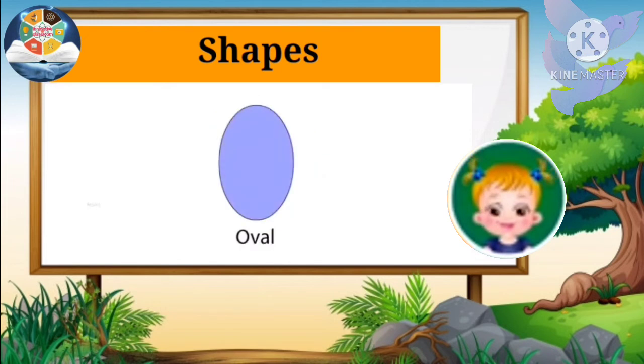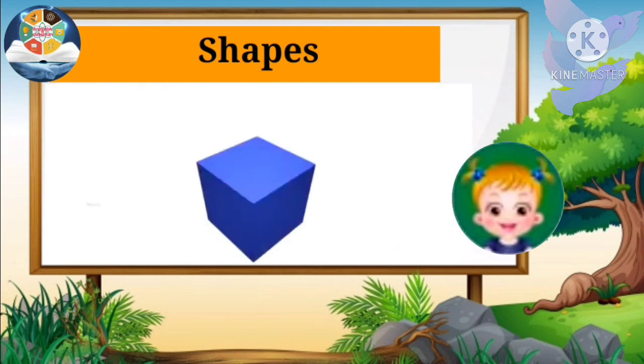Oval. This is an oval. It also has no sides and no corners. It looks like an egg. Solid Shapes: This is a cube.